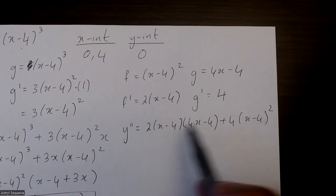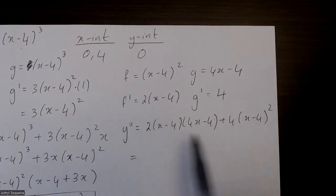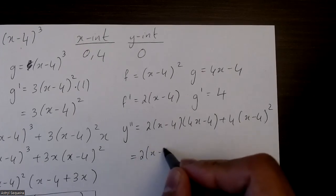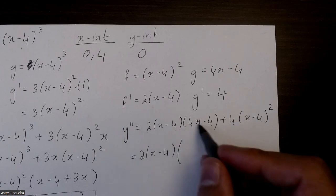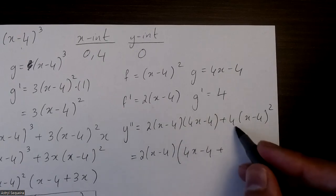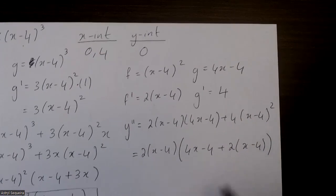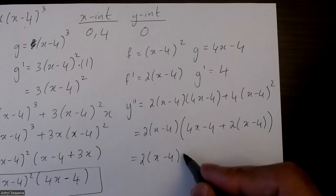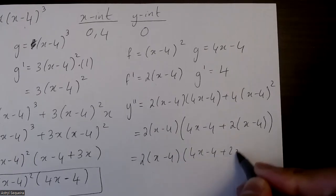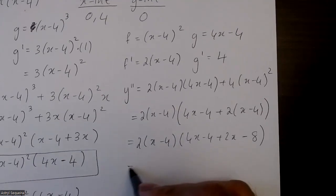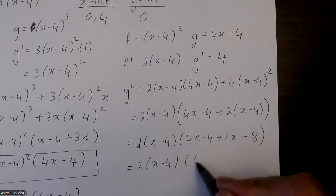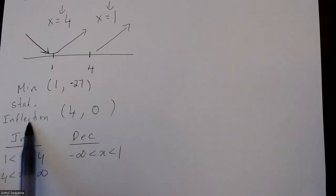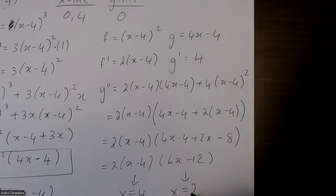I can factor out (x minus 4), and also factor out a 2. Taking out 2(x minus 4), I'm left with 4(x minus 4) plus 2(x minus 4), which expands to 4x minus 4 plus 2x minus 8, simplifying to 6x minus 12. So my inflection points are x = 4 — which I expected as it was a stationary inflection point — and x = 12/6, which is 2.